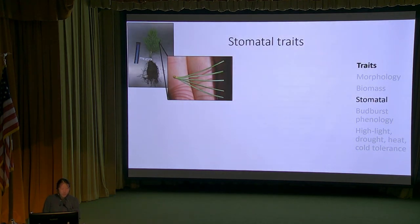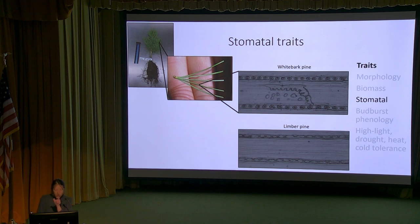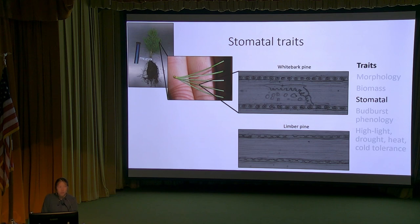For stomatal traits, we focused on fascicles of needles from these five-needle pines, took imprints of stomata, and visualized them under a microscope. The stomata appear in two rows on both limber pine and whitebark pine. We measured stomatal size and density - if a species has more and larger stomata, it can take up more CO2 and water for photosynthesis compared to another species.